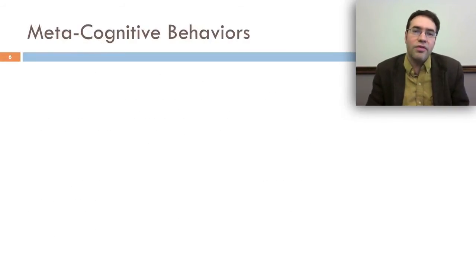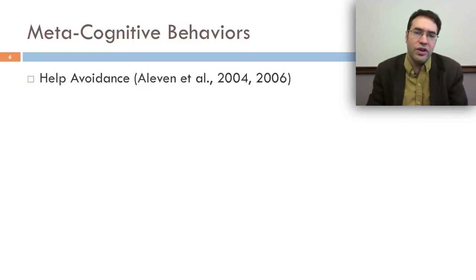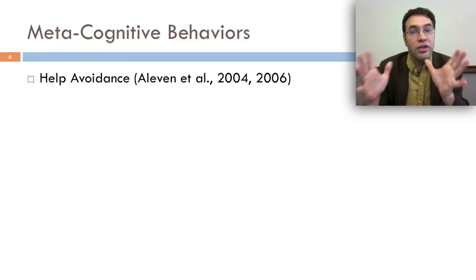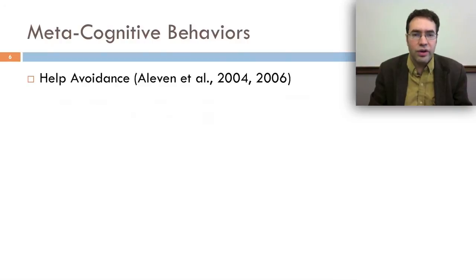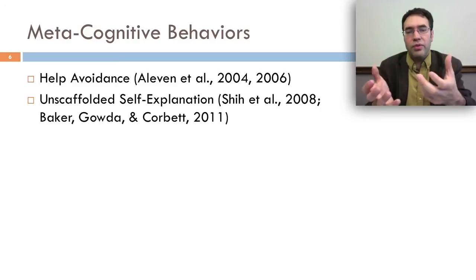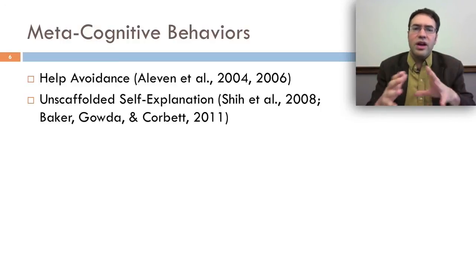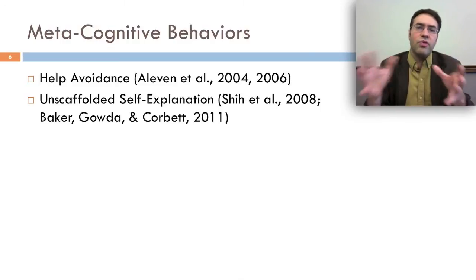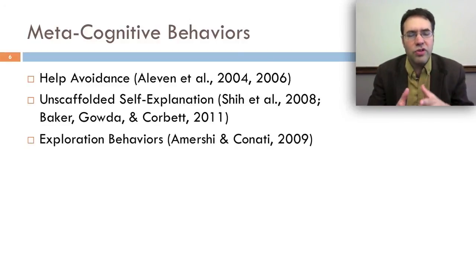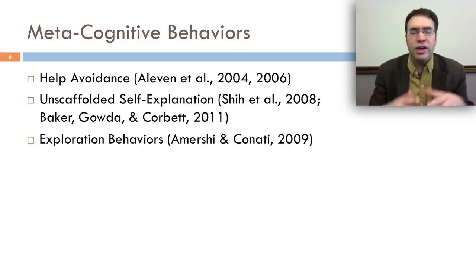Another thing that people have studied is metacognitive behaviors. For example, help avoidance — when a student really needs help but decides not to ask for it. And unscaffolded self-explanation, where a student, after getting a message about why they're wrong or getting a hint, carefully stops and thinks through it rather than just moving on. And exploration behaviors, which Emersi and Kanadi studied in a landmark paper in the first issue of the Journal of Educational Data Mining.